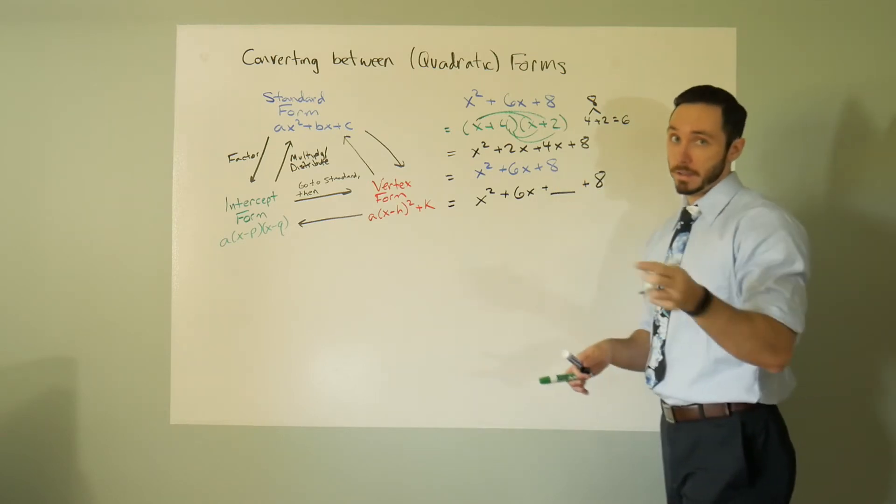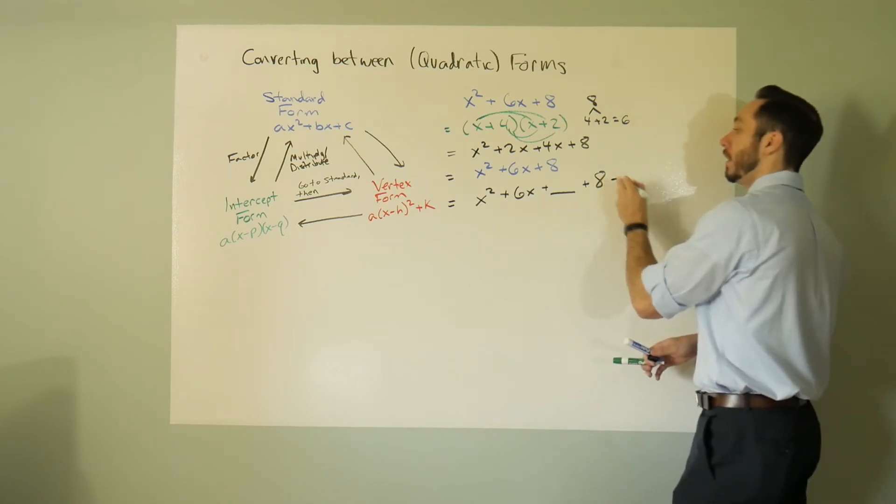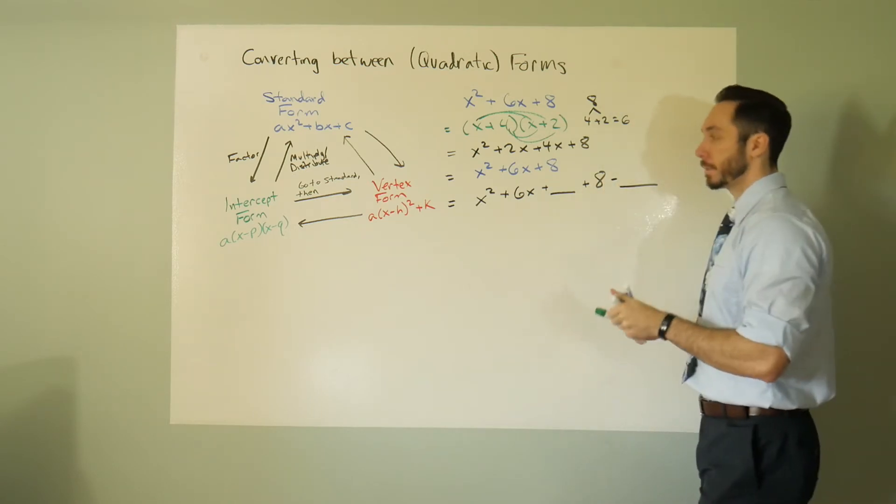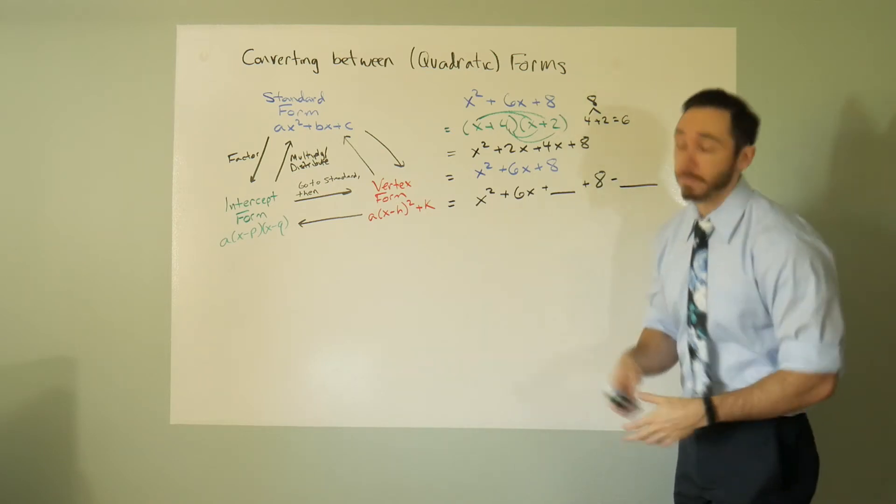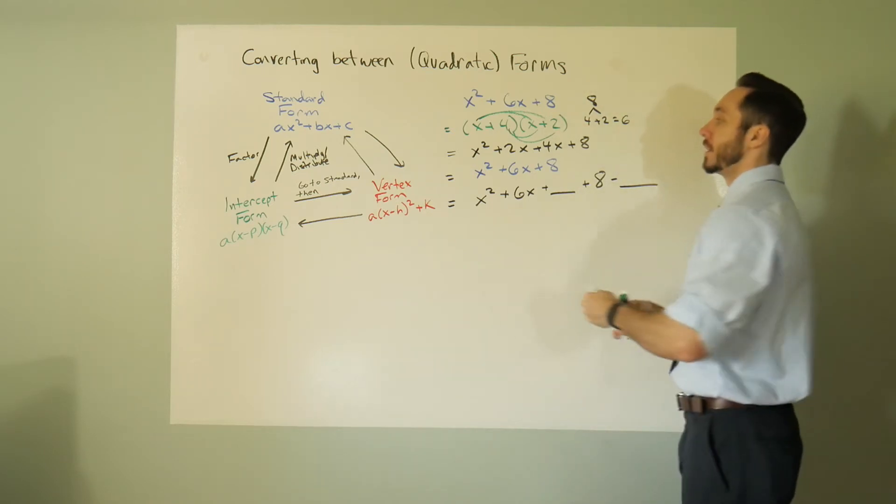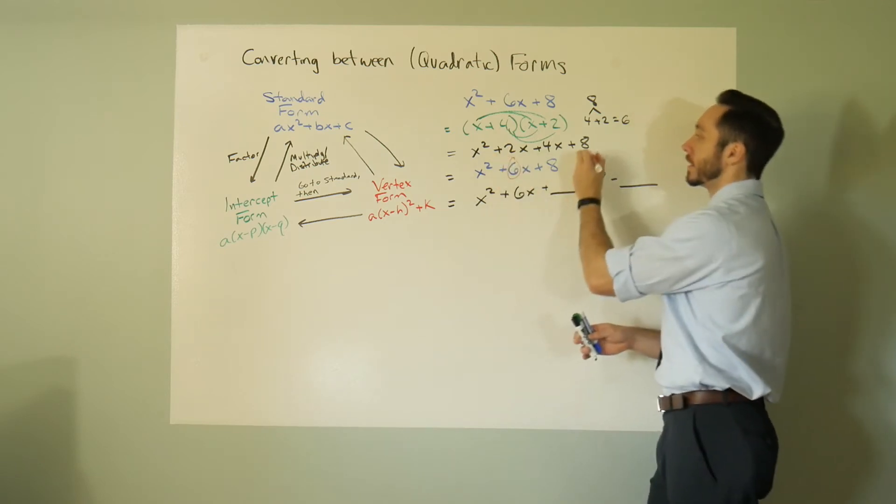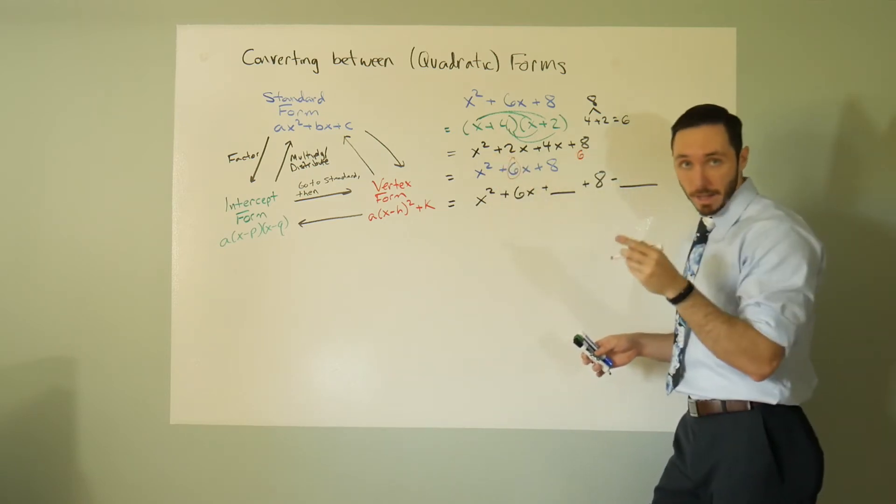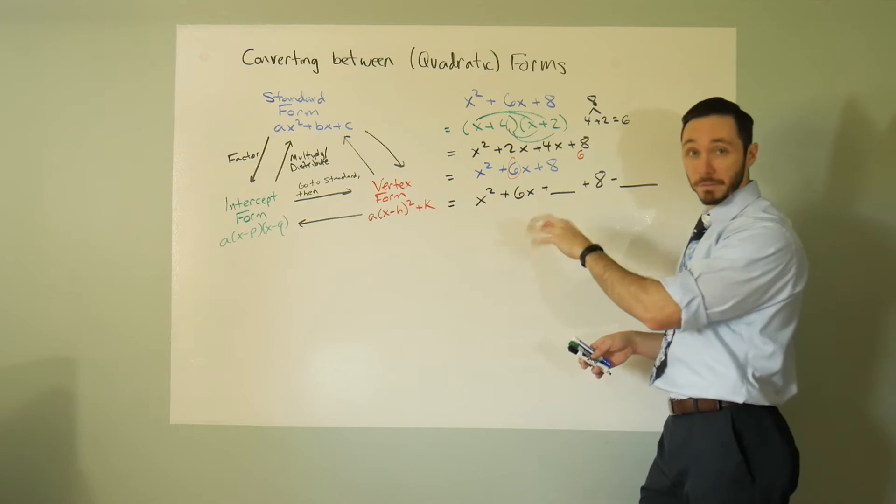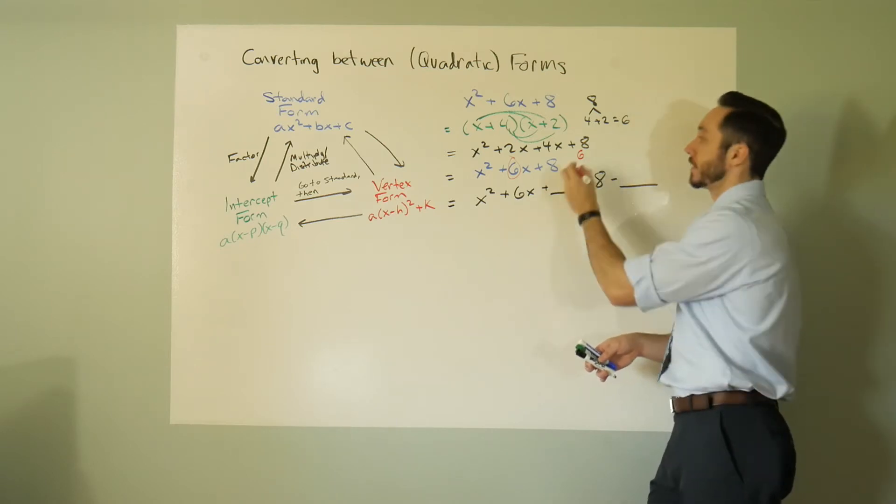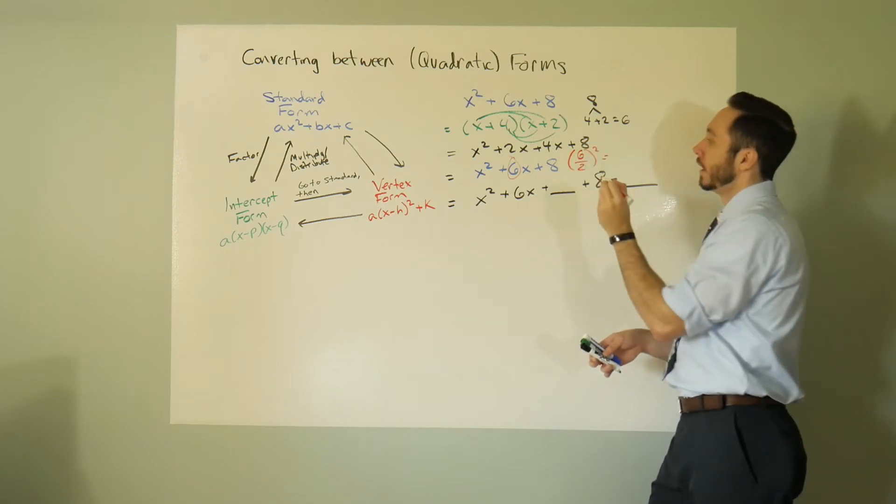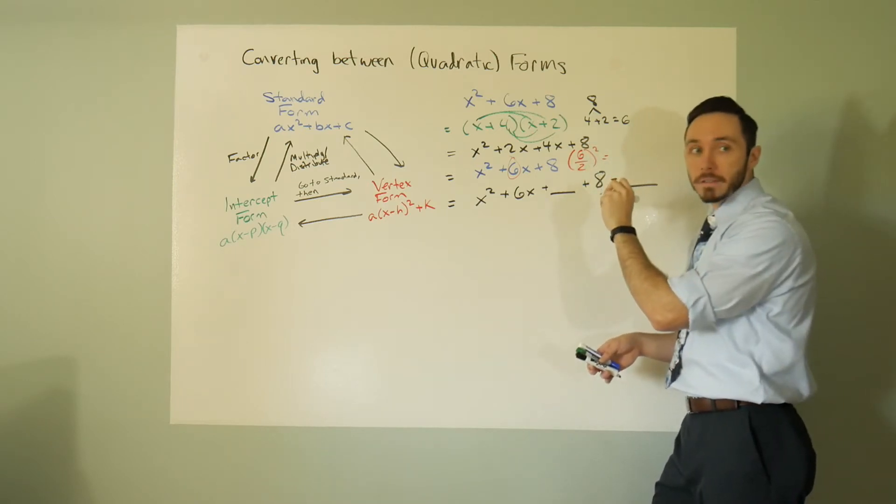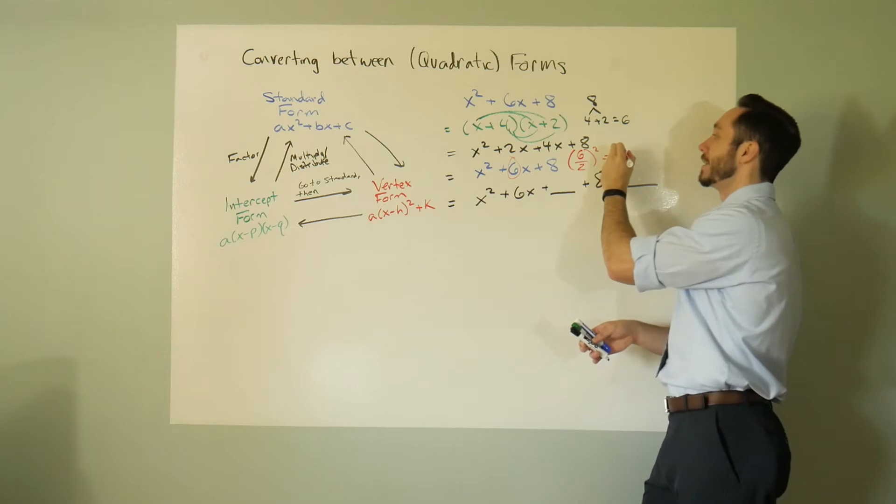If you're going to add some sort of number, you also have to subtract it back on out. So the process is to take this b value, the 6, cut it in half and square it. We want to create a perfect trinomial here. So we take 6, cut it in half and square it. 6 cut in half is 3, 3 squared is 9.